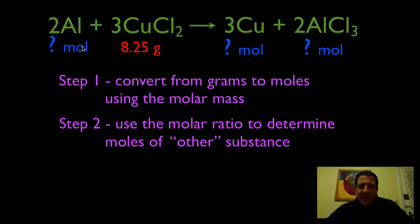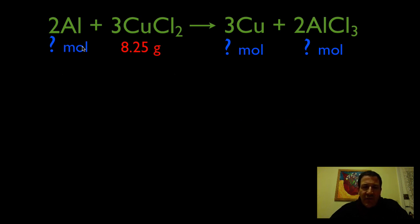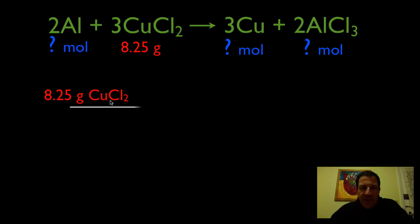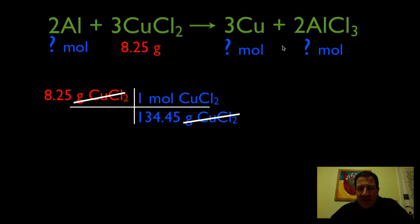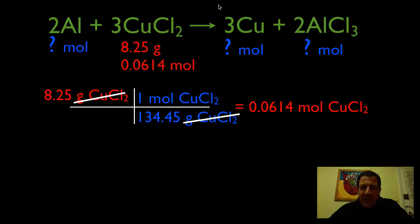Step one is to convert from grams to moles, so we're going to convert 8.25 grams of CuCl₂ into its corresponding moles. Write down the number, the unit, and the chemical formula. We're going to use the molar mass. The molar mass of copper chloride is 134.45 grams, which is equivalent to one mole. We put the grams on the bottom to cancel, and now we're in moles of CuCl₂. I like to write the mass and the corresponding moles together so we can see they go together.